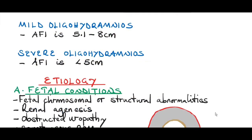Oligohydramnios is divided into two according to severity: mild oligohydramnios and severe oligohydramnios. Mild oligohydramnios is when the amniotic fluid index is 5.1 to 8 centimeters, whilst in severe oligohydramnios, the amniotic fluid index is less than 5 centimeters.